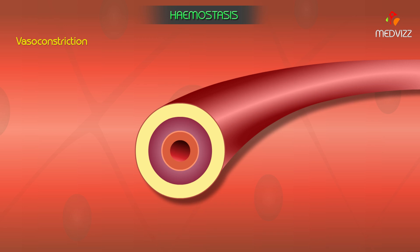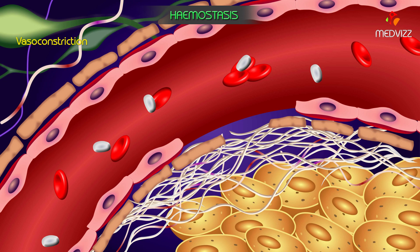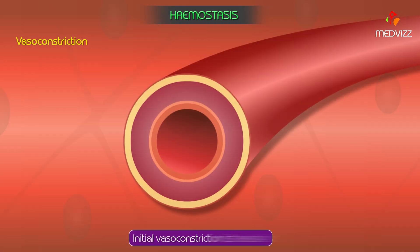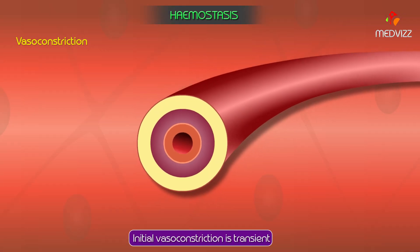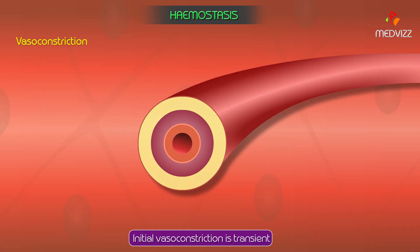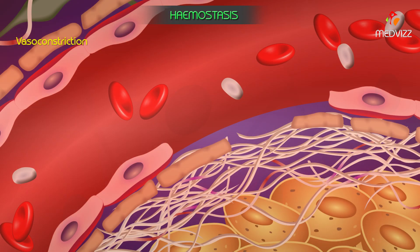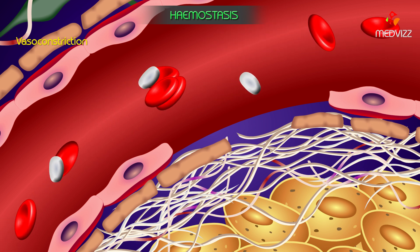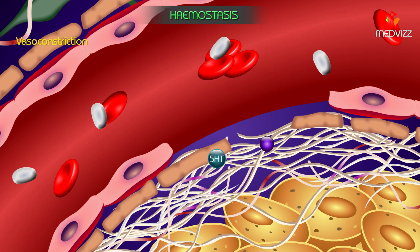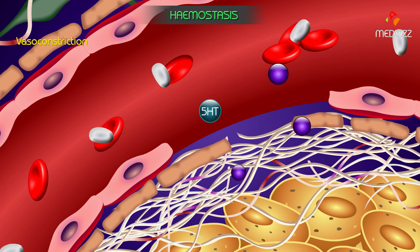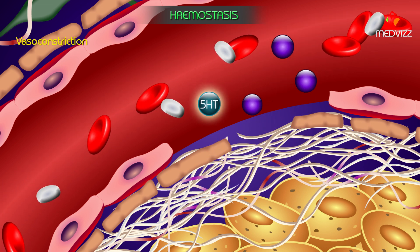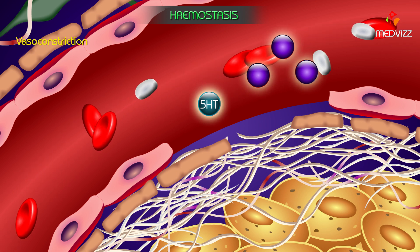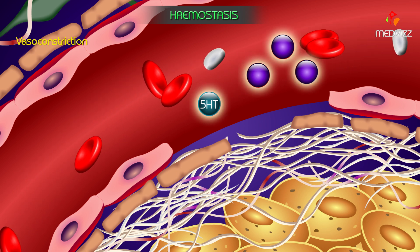Initial vasoconstriction is caused by the direct effect of injury on the vascular smooth muscles. This initial vasoconstriction is transient but is maintained for several minutes or even hours by humoral facilitation due to the release of 5-hydroxytryptamine and other vasoconstrictors.